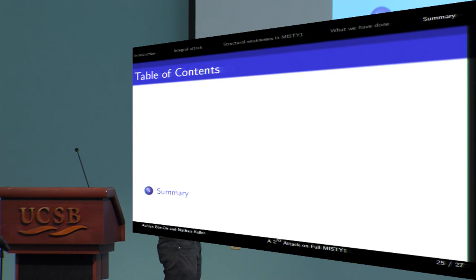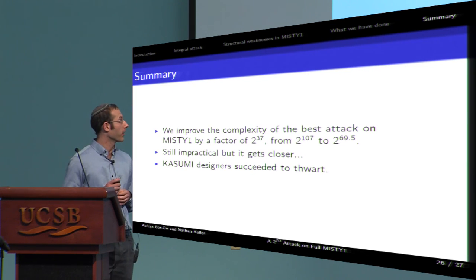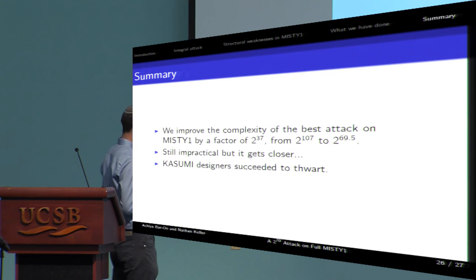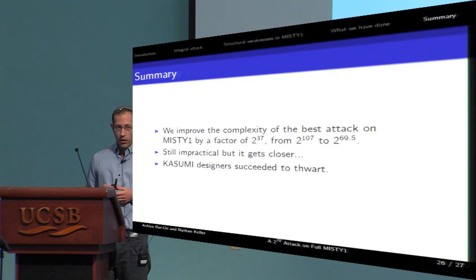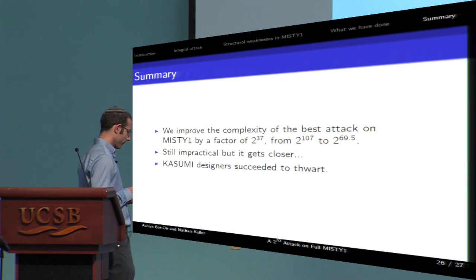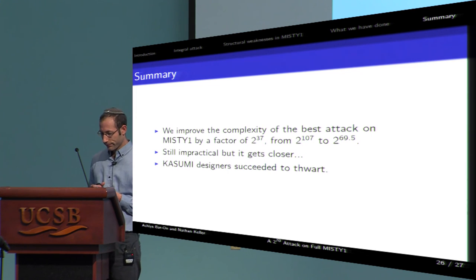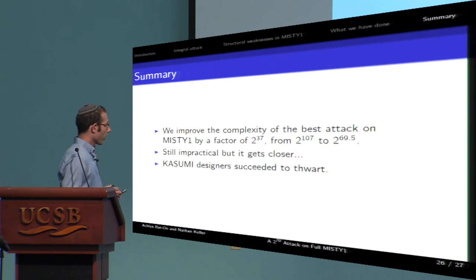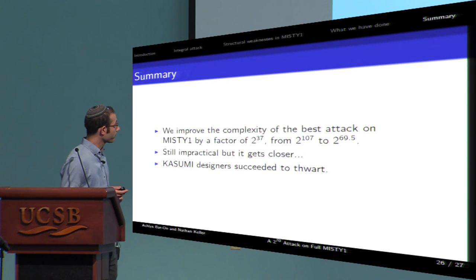To summarize. We significantly improved the previous best known attack on the full MISTY-1 cipher by a factor of two to the 37. However, our attack is not a practical attack due to the amount of data that is required. In addition, our attack doesn't work against Kasumi in part because of the changes that were made in its design. And that's it. Thank you.